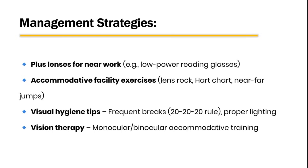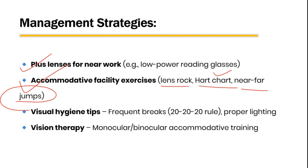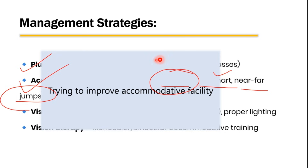Management includes plus lenses for near work to alleviate symptoms, and accommodative facility exercises like lens rock, hart chart, and near-far jumps. In lens rock exercises, using flipper lenses (e.g., plus 2 or minus 2), the patient focuses on a near chart at 40 centimeters, alternately using the plus then minus lens on the flipper, repeating for one to two minutes. The goal is to increase speed and accuracy in shifting focus between lenses. Visual hygiene tips — frequent breaks and proper lighting — are also important.